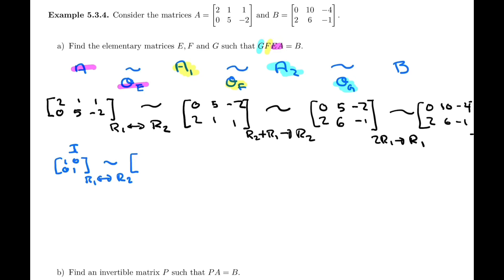And we apply the same elementary row operations that we applied to the matrix A. So this first operation, this will give me the first matrix. So interchange row 1 and row 2, so 0, 1, 1, 0, and this will be matrix E.